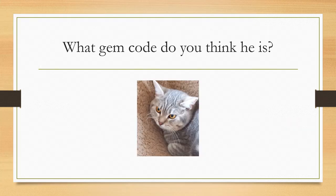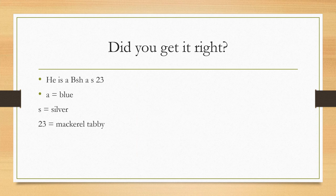This is Charlie. What gem code do you think he is? So Charlie is a British Shorthair, so BSH, and he is A because he is blue, and S because he is silver.